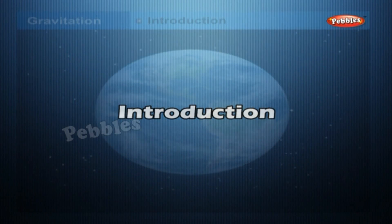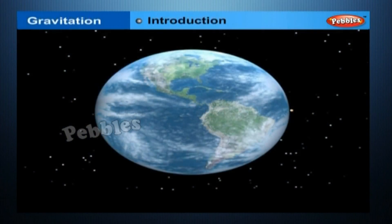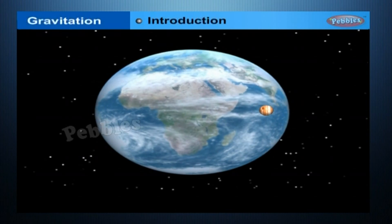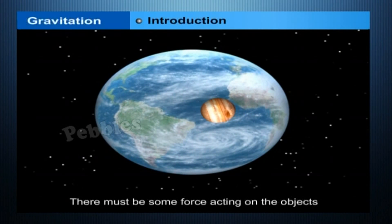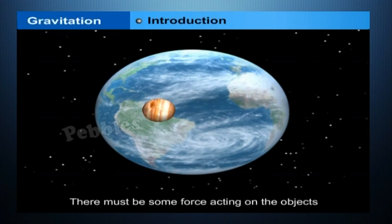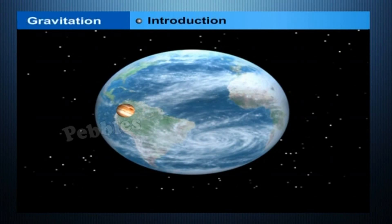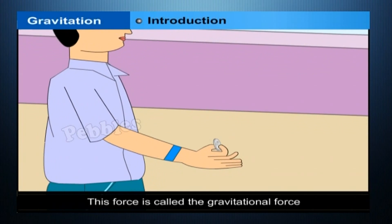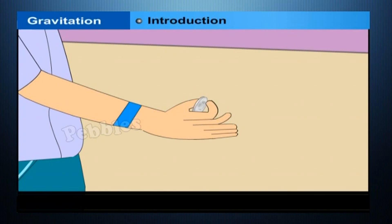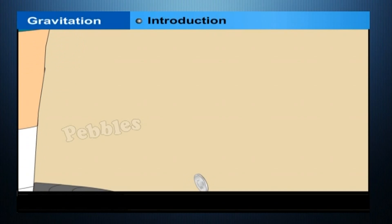Gravitation introduction: the moon goes around the earth, and in all these cases there must be some force acting on the objects, the planets, and on the moon. Isaac Newton could grasp that the same force is responsible for all these. This force is called the gravitational force. We shall learn about gravitation and the universal law of gravitation.